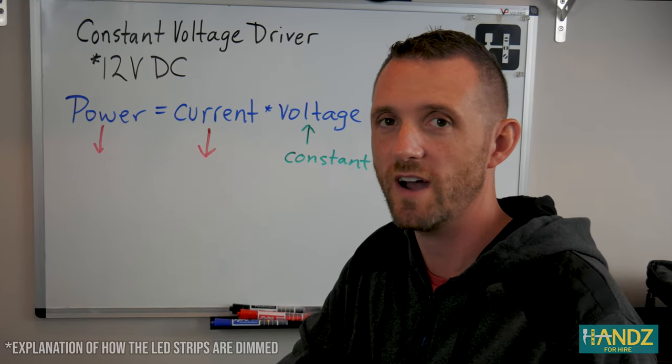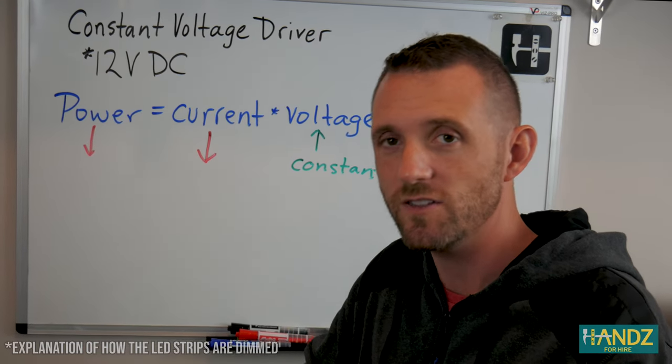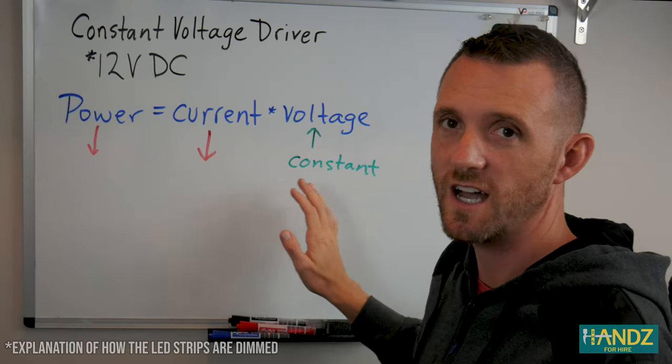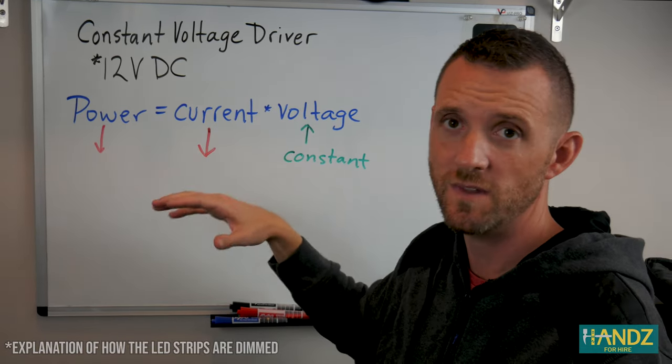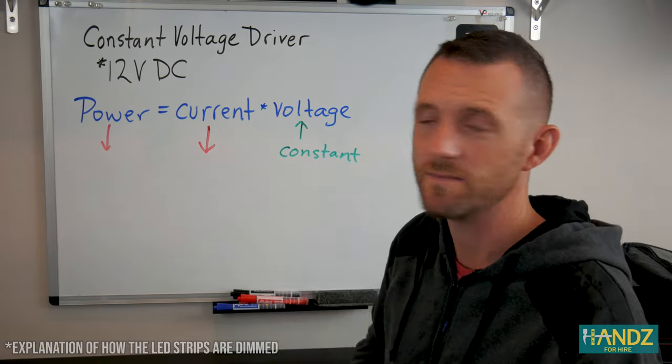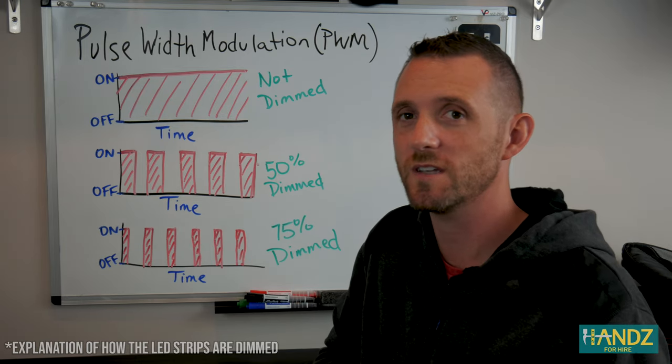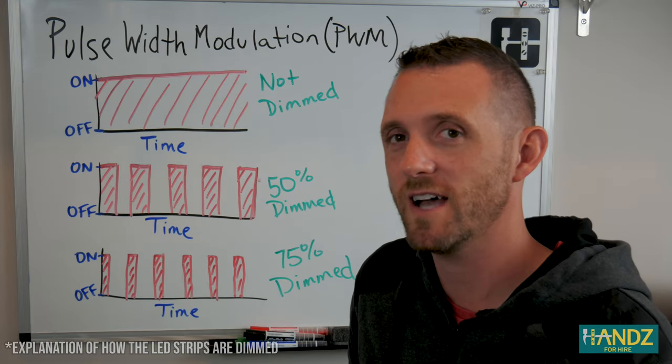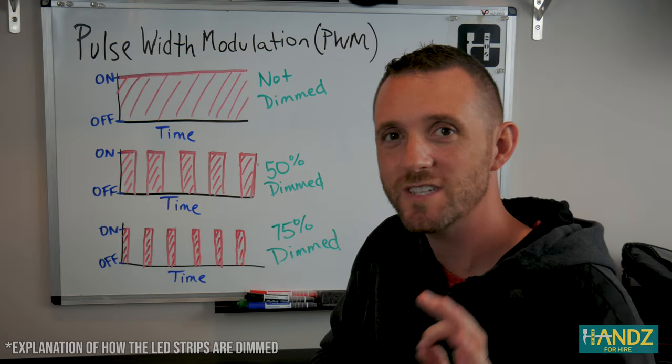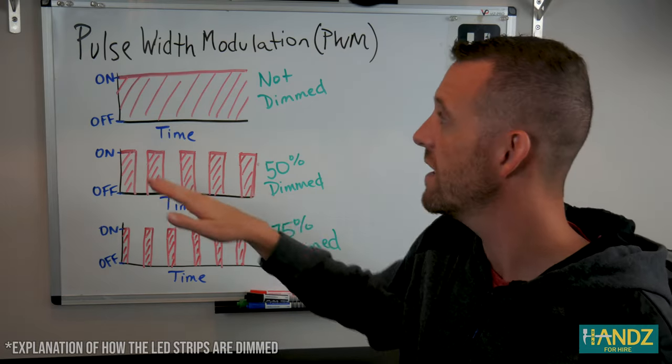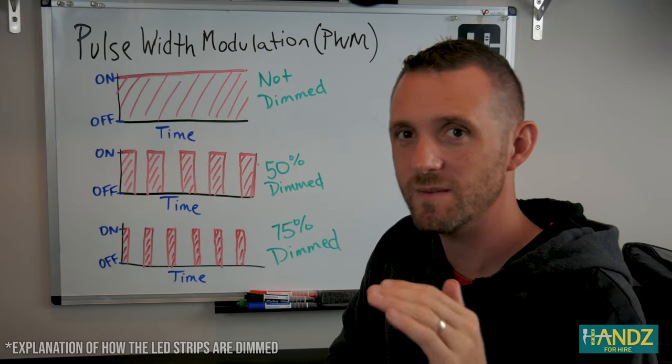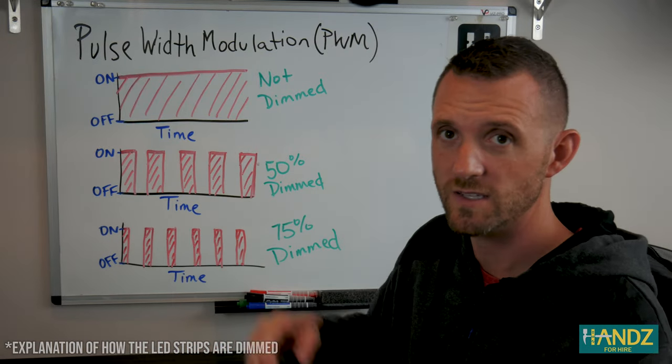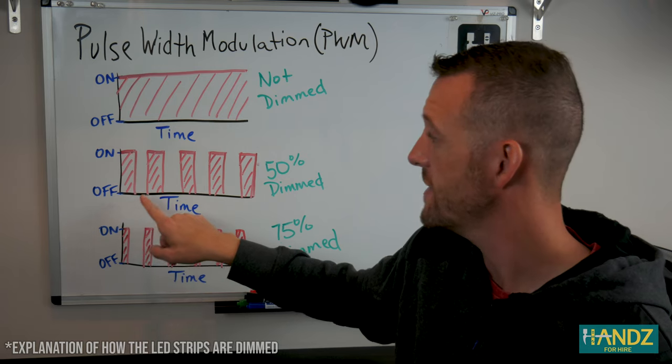The transformer we're using is a constant voltage driver, which means that through the LED loop, it's 12 volts at all times. If we look at our physics equation, power equals current times voltage. The voltage is constant, so in order to decrease the power or dim the lights, the current has to decrease. In order to bring down the current, the LED driver or transformer uses something called a pulse width modulation or PWM. What that means is the driver controls the amount of time the circuit's on and off to regulate the amount of current. For example, if Steven's under-cabinet lights are on all the way and not dimmed at all, then it doesn't pulse at all.